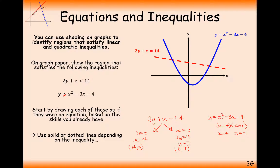We draw a solid line for the quadratic because it includes the equal-to case. We want the y-coordinate to be bigger than the quadratic line, so an upward arrow there. For 2y plus x less than 14, we need a downward arrow. The intersection of these gives the shaded yellow region representing our answer.